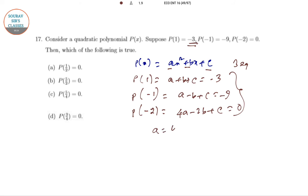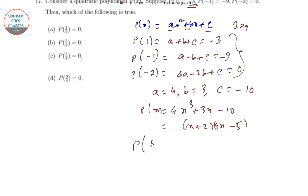So here we have got three solutions. On solving, we get a equal to 4, b equal to 3, and c equal to minus 10. So P of x is a simple equation: 4x squared plus 3x minus 10. So if you just simplify it, it will be x plus 2 into 4x minus 5.